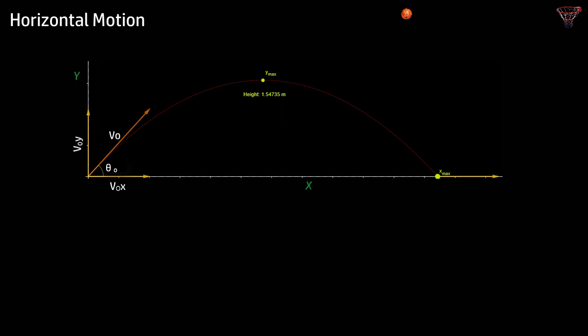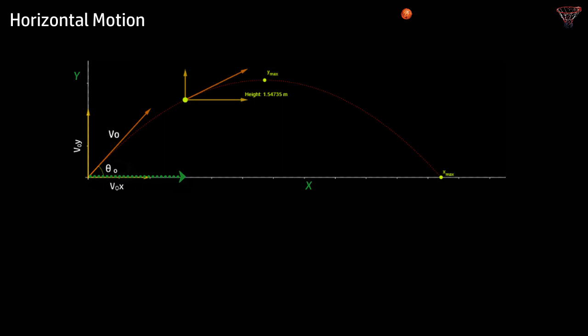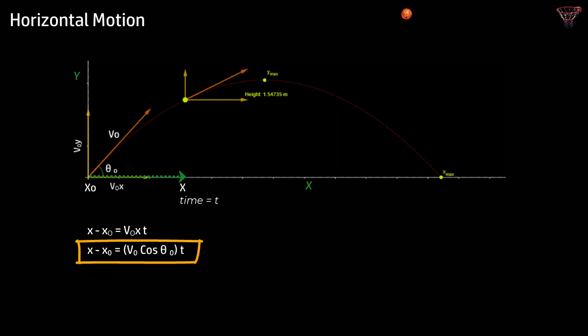Let us start with horizontal motion, which is easier to analyze because the velocity is constant. Taking v₀ₓ as the velocity in the horizontal direction, the displacement in time t is v₀ₓ × t. So if the initial position is x₀ and position at time t is x, then: x − x₀ = v₀ₓ · t, or equivalently, x − x₀ = v₀ cos θ₀ · t.